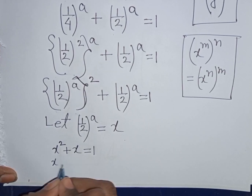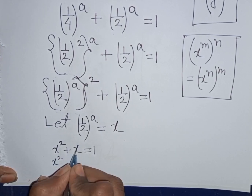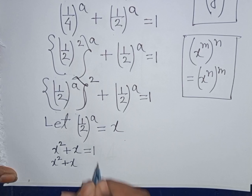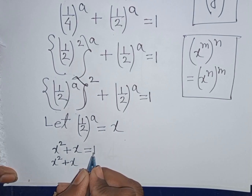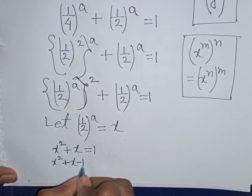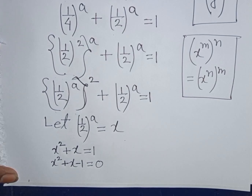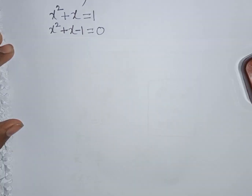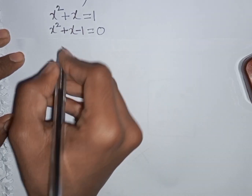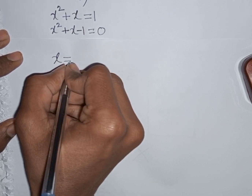We can write x^2 plus x, then taking the 1 to the left side, this will be minus 1, equal to 0.